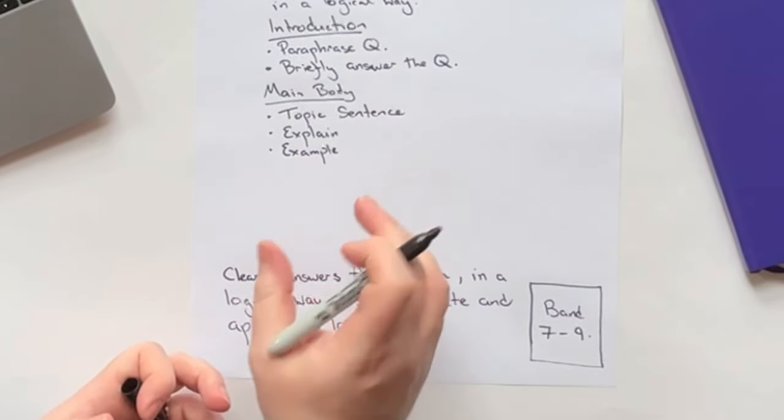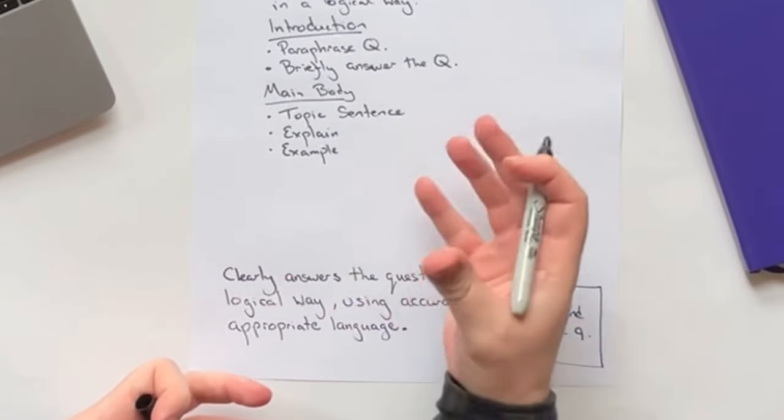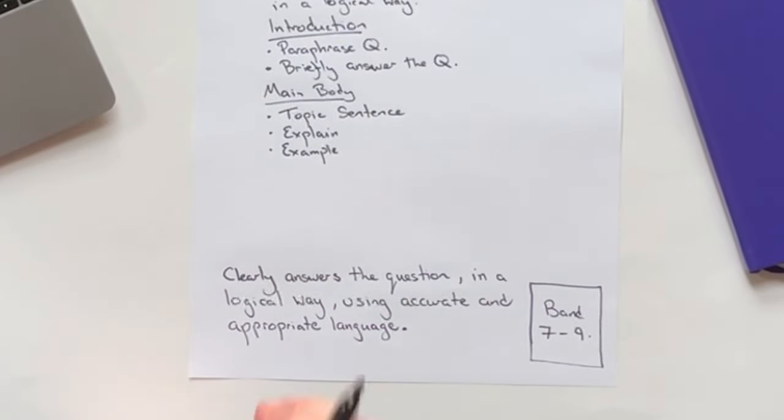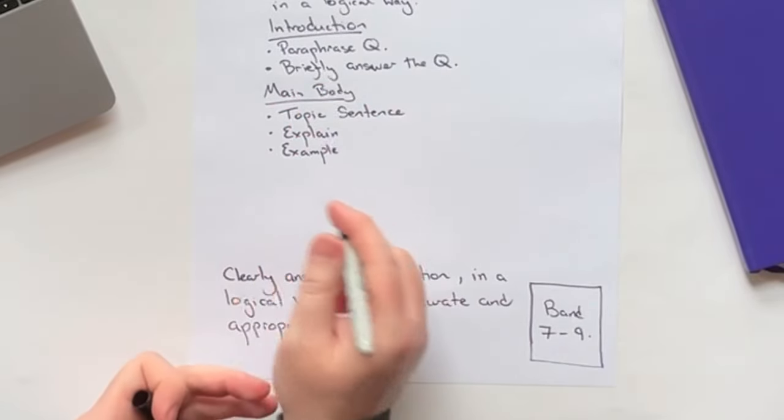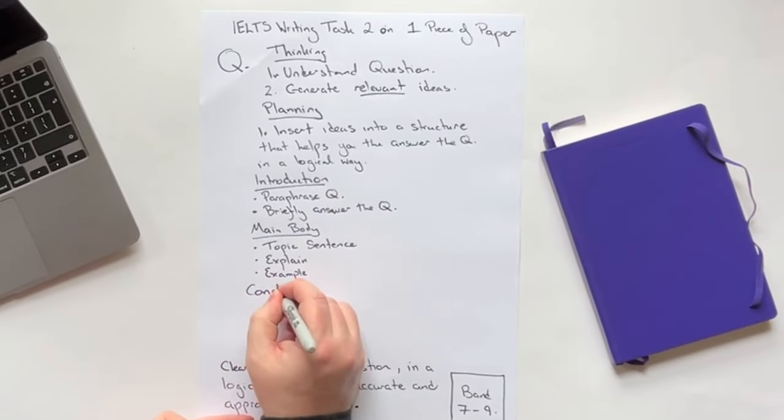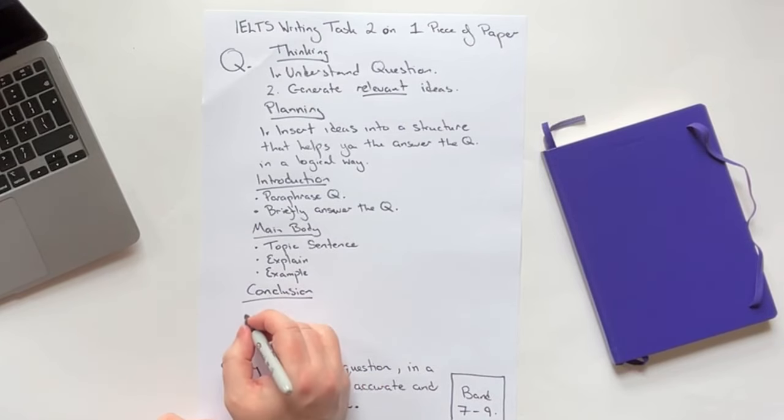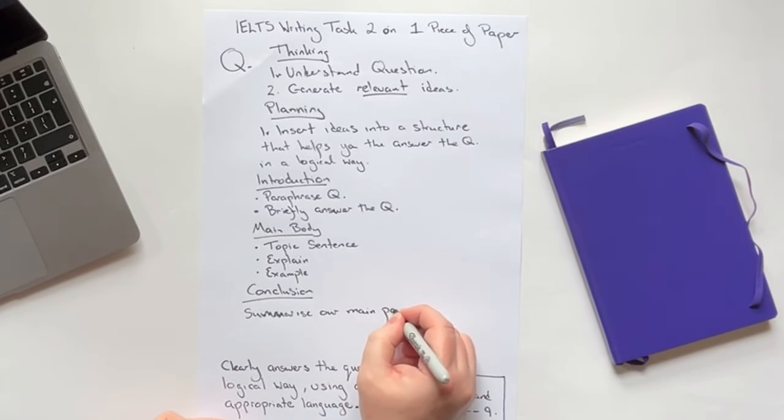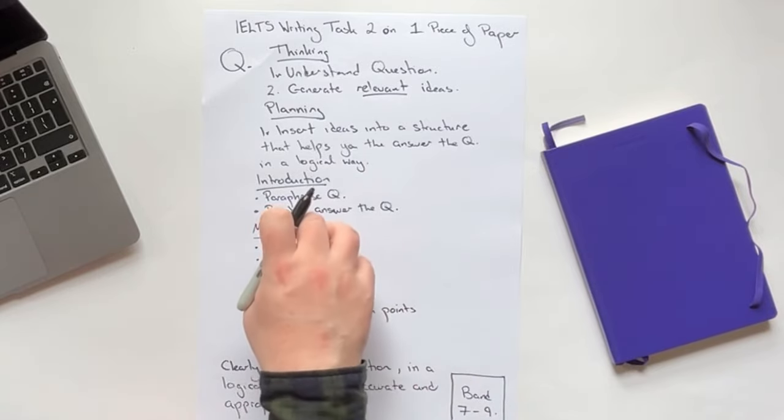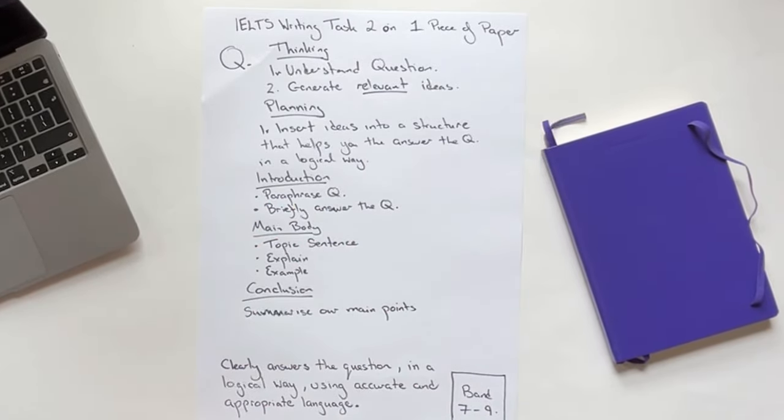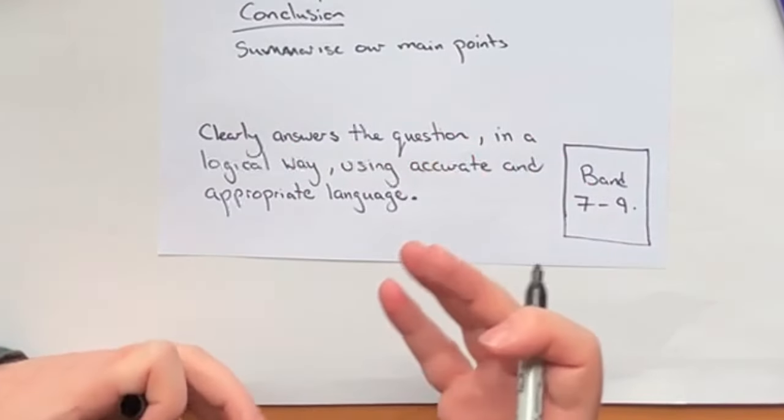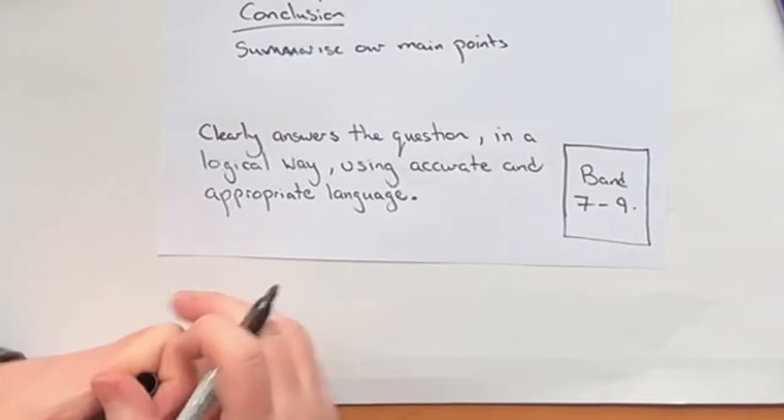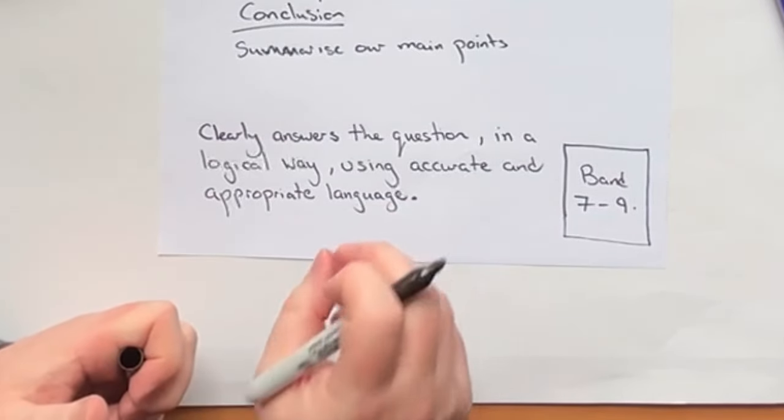That further demonstrates that you have clearly understood the question, and you're clearly answering it in a logical way. And there will normally be two main body paragraphs. And then the conclusion, all we're doing in the conclusion is we're going to summarize our main points. So we're going to summarize the main points of the essay. Why do we do this? Because it helps the examiner understand that you've clearly answered the question in a logical way.